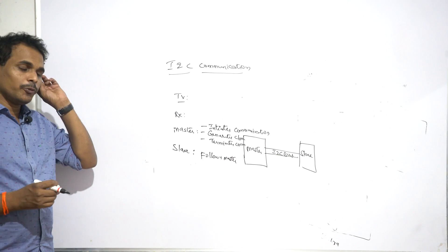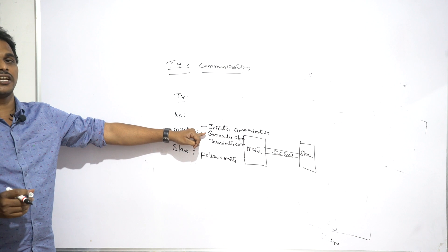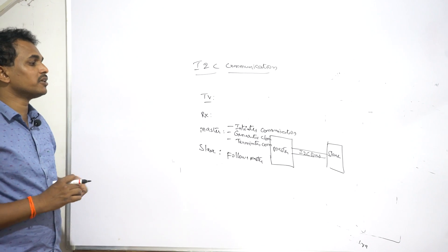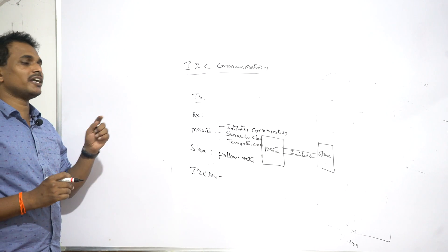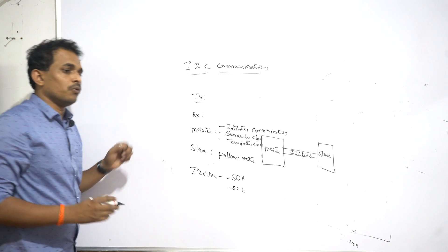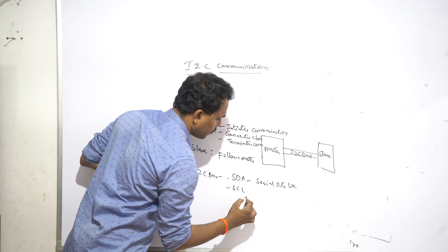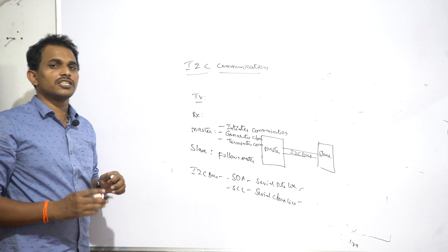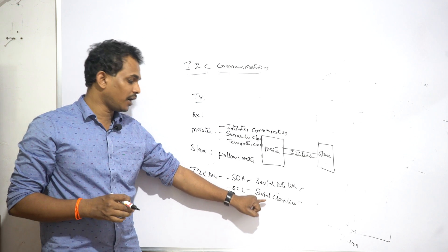So to define master and slave: the master initiates communication, generates the clock, and terminates the communication; the slave follows the master. The I2C bus consists of two physical lines used to connect master and slave. These two physical lines are SDA — the Serial Data Line — and SCL — the Serial Clock Line.